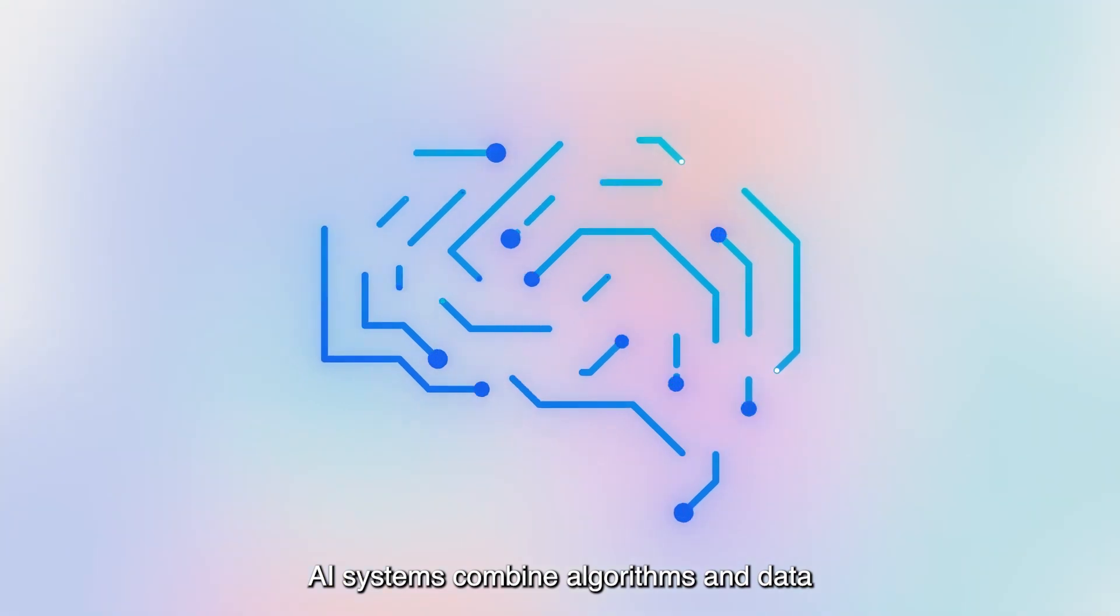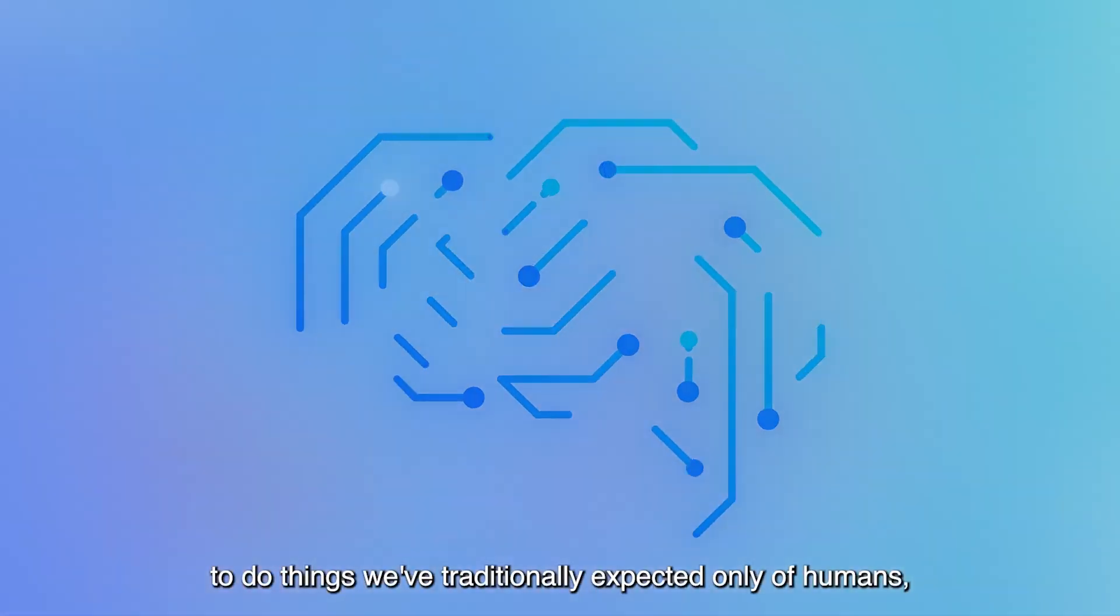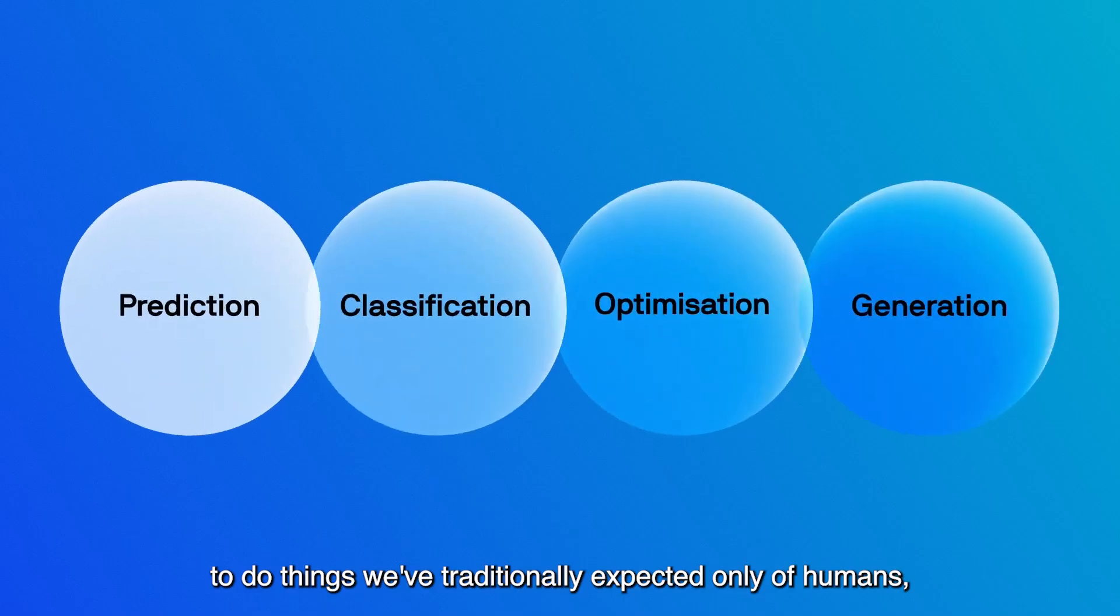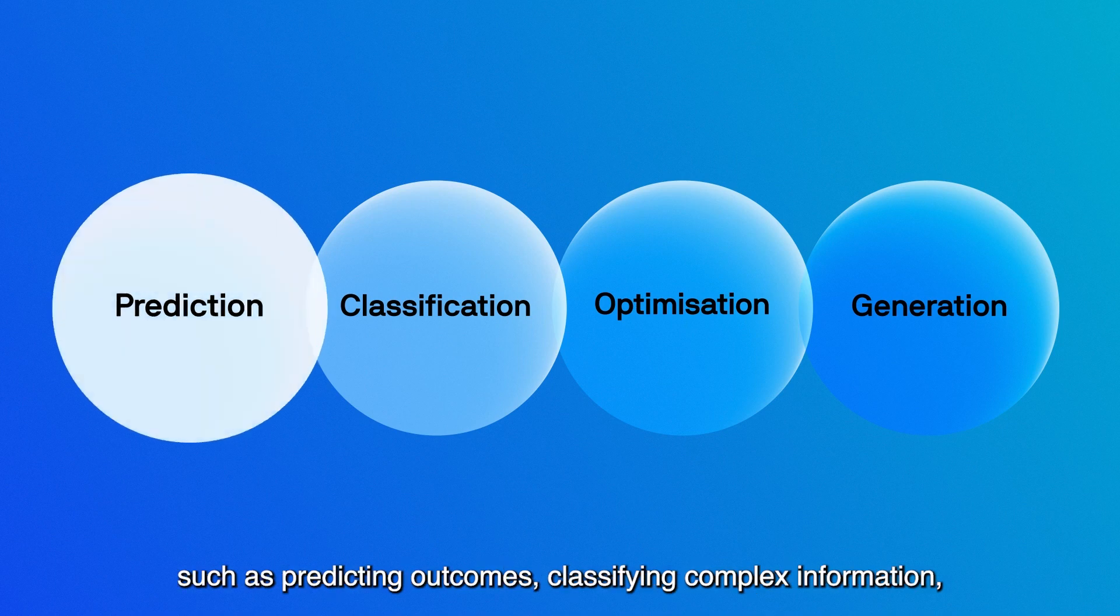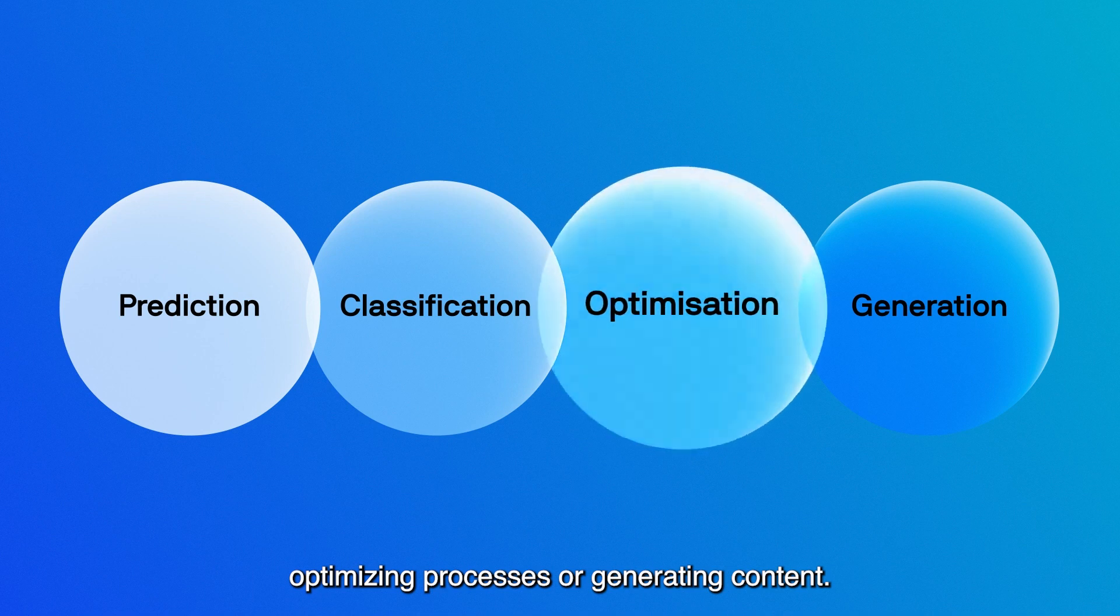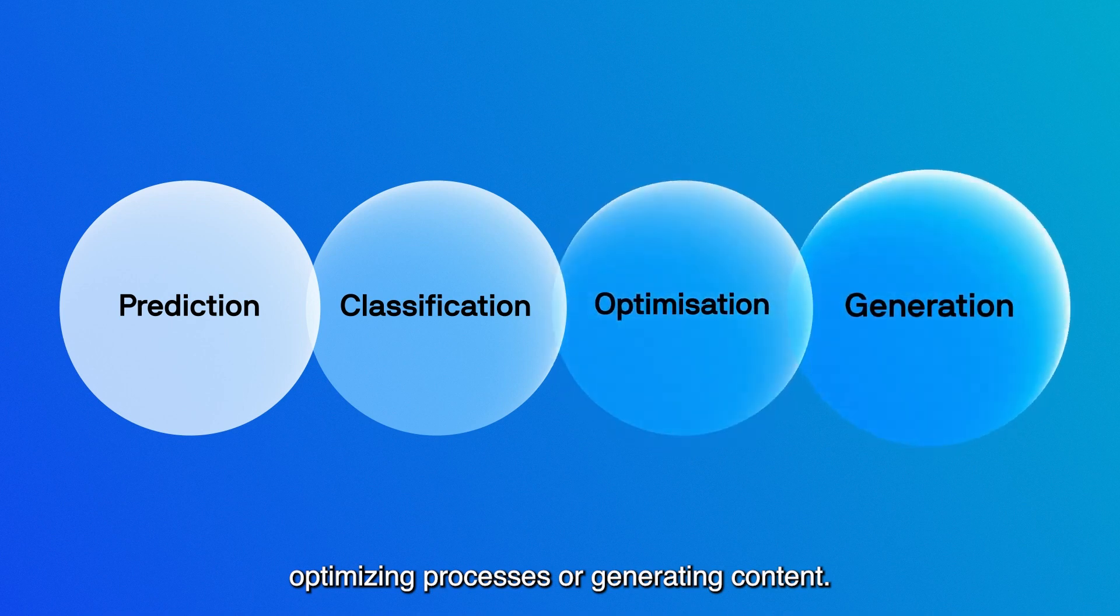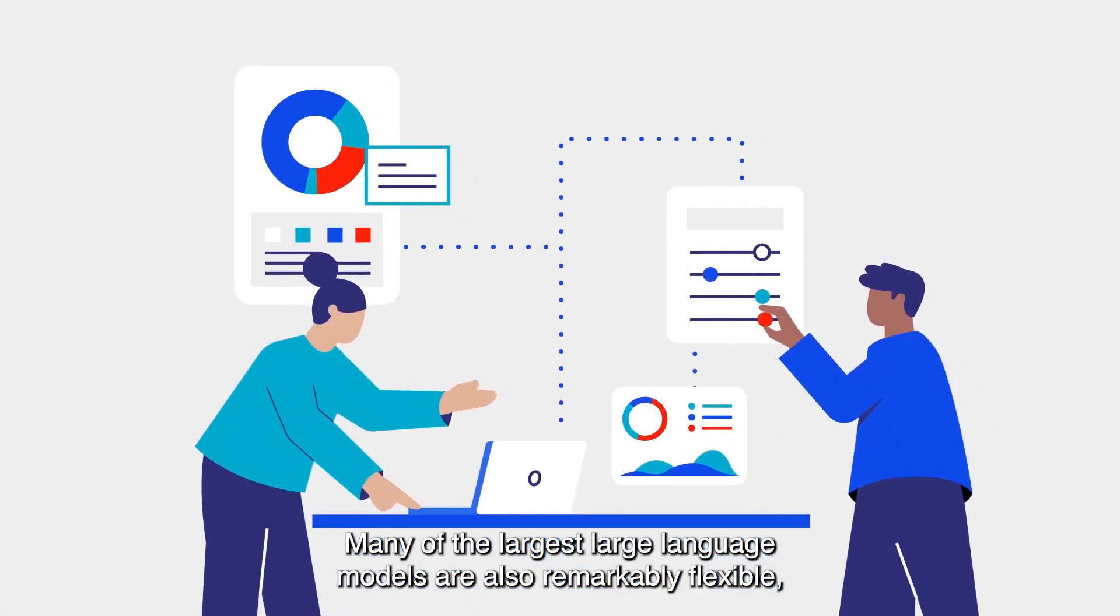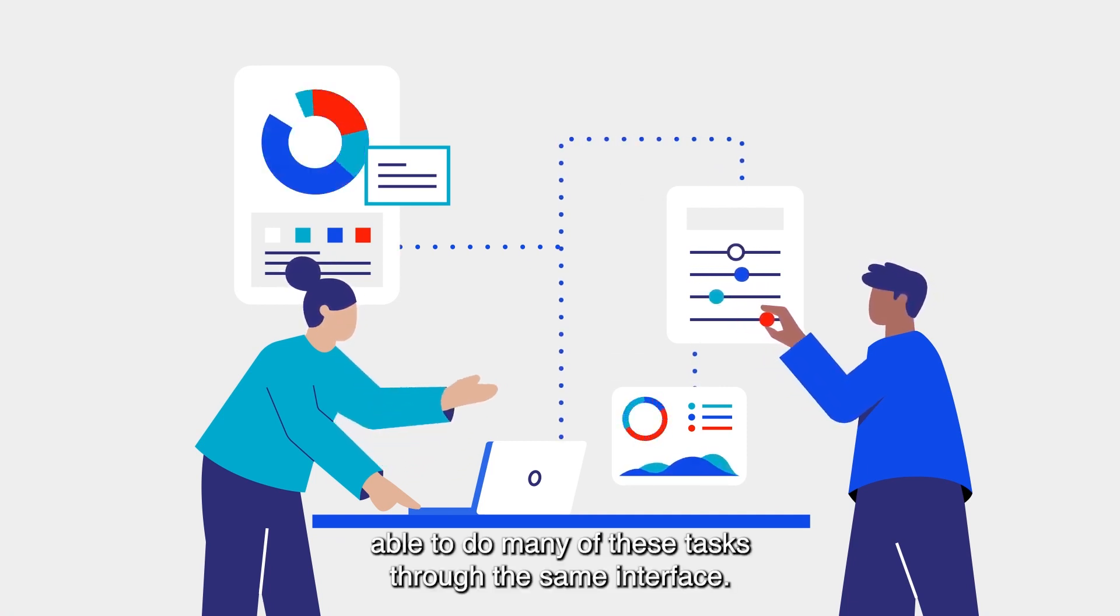AI systems combine algorithms and data to do things we have traditionally expected only of humans, such as predicting outcomes, classifying complex information, optimising processes or generating content. Many of the largest large language models are also remarkably flexible, able to do many of these tasks through the same interface.